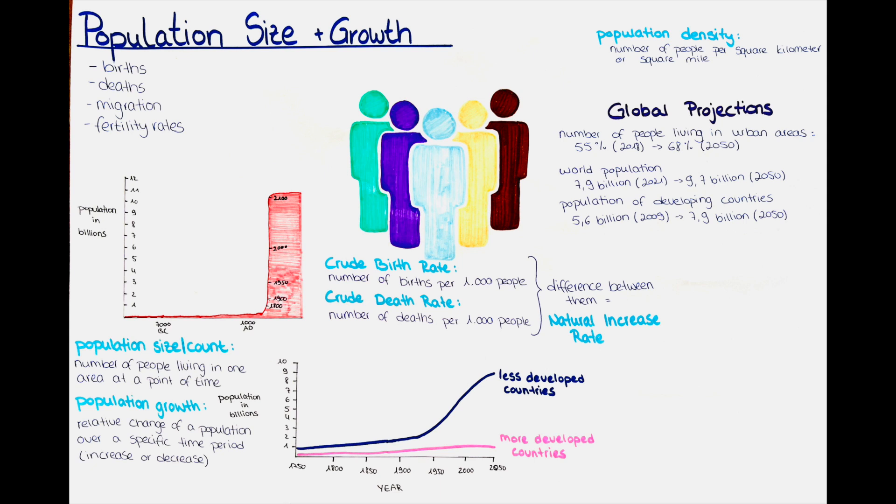Migration is another crucial factor in population growth and is measured using net migration, which is the difference between the number of immigrants and emigrants in a population. Migration trends globally can vary over time and are influenced by numerous factors, including economic opportunities, political instability, armed conflicts, environmental changes and social factors.